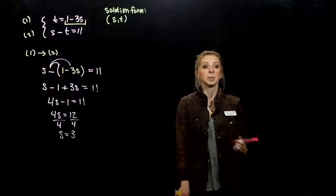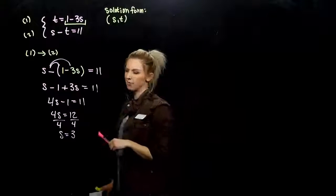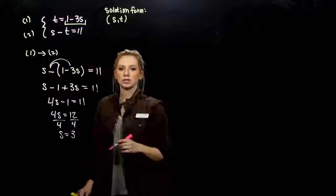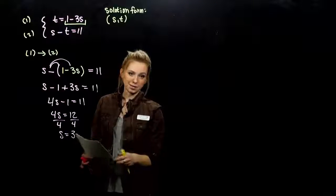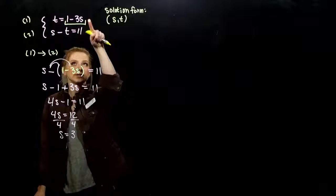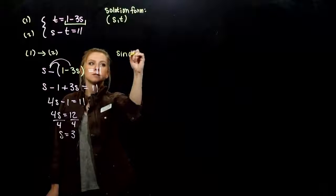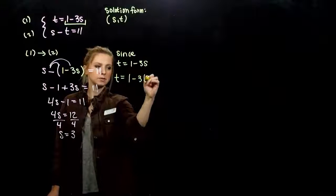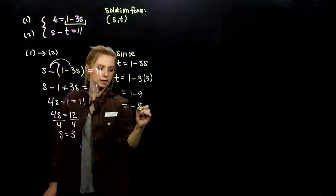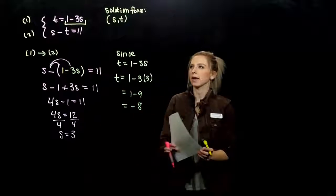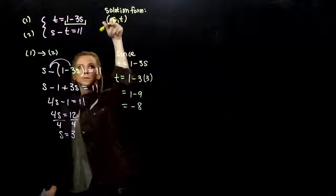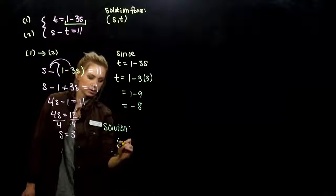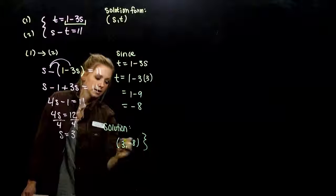We've figured out the first coordinate, but we still need the second. What t value is associated with s equals three? We can plug it back into either equation — the first is easiest since t is already isolated. Since t equals one minus three s, we get t equals one minus three times three, which is one minus nine, which is negative eight. Our solution: s comes first, t second — the intersection is at the point (3, -8).